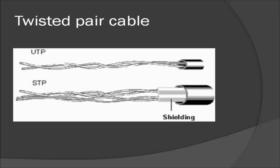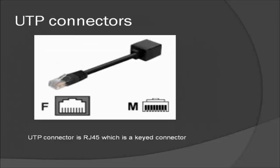However, STP is more bulky and more expensive. The most commonly used UTP connector is the RJ45 jack, that is the registered jack. It has a female connector and a male connector, and the female connector accepts the male connector into it. Twisted pair cables are used in telephone lines to provide voice and data channels.